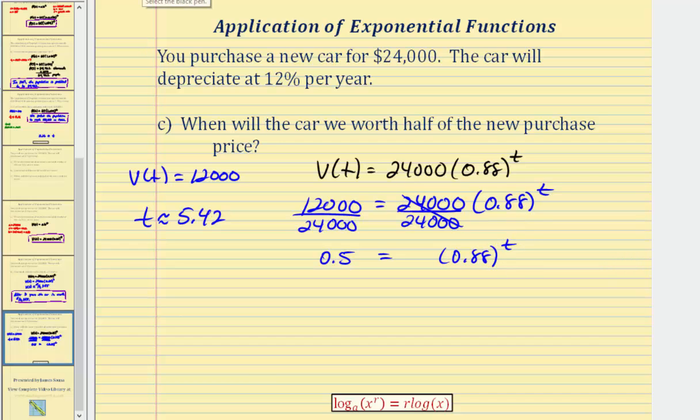Again, we'll take the common log of both sides of the equation. And now on the right side we apply the power property of logarithms. So we take the exponent of t and write this as a product.